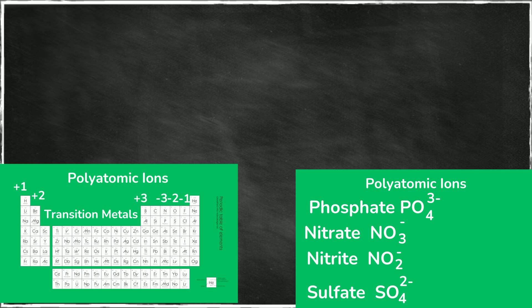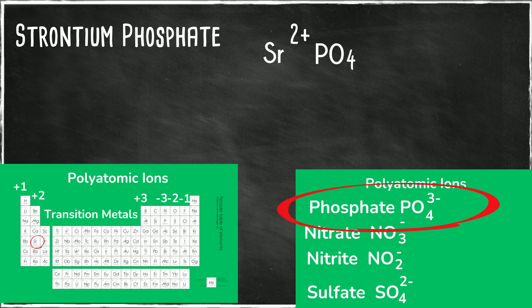Now we have strontium phosphate. Strontium is in group 2 so it has a plus 2 charge. Phosphate if you look on the list of polyatomic ions it has a negative 3 charge. We are not at zero so we will cross.